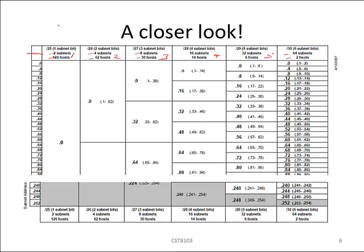The trick in using this chart is to find the column in the very first row that matches our subnetting requirements. For example, if we have a requirement to subnet an address into eight subnets, our subnetting recipe would be a slash 27, where we have borrowed three host bits and have exactly eight subnets, each carrying 30 usable IP addresses.